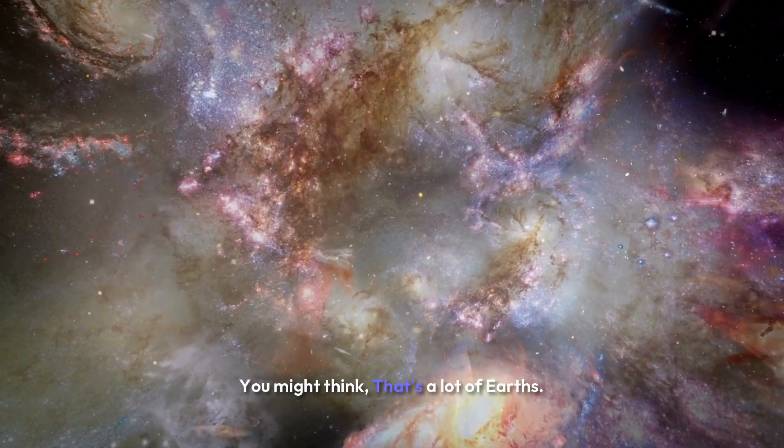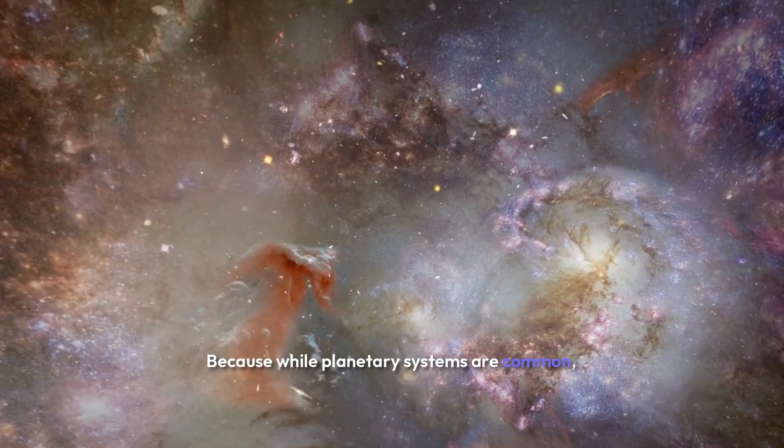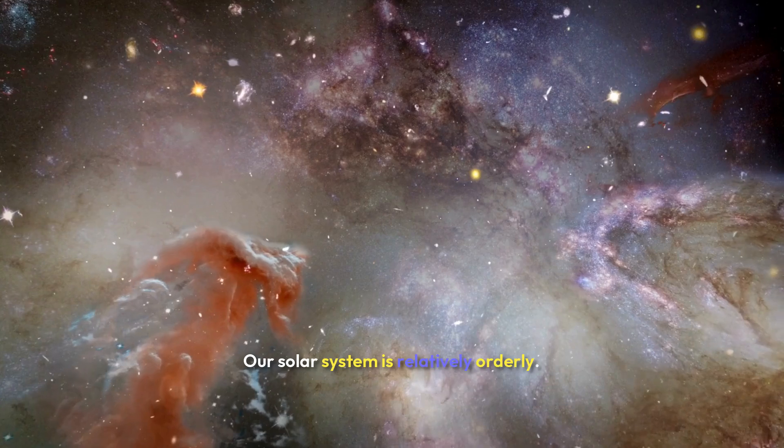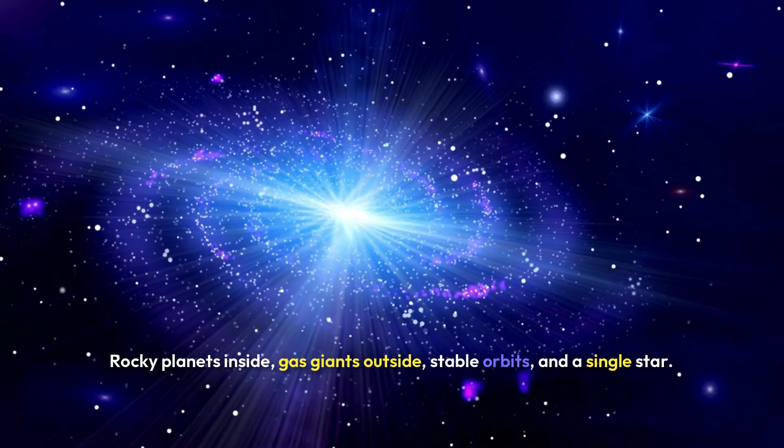You might think, that's a lot of Earths. Not quite, because while planetary systems are common, our type of system isn't. Our solar system is relatively orderly. Rocky planets inside, gas giants outside, stable orbits, and a single star.